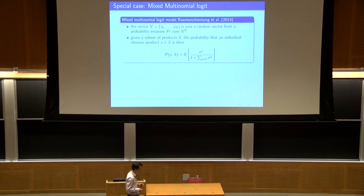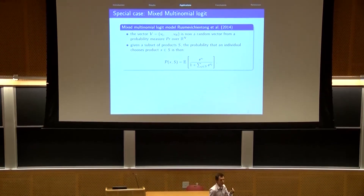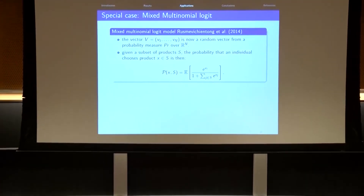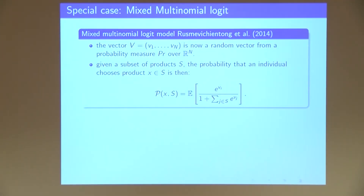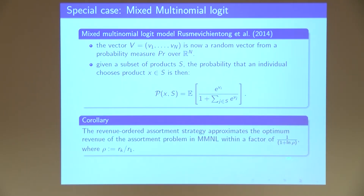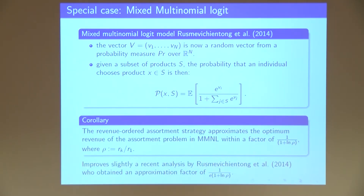One application is the mixture of multinomial logit, a very classic model in discrete choice with a recent paper analyzing the revenue order assortment. We can apply our theorem directly because the regularity condition holds easily for this choice model, and what we get slightly improves the recent analysis done for this particular discrete choice model.